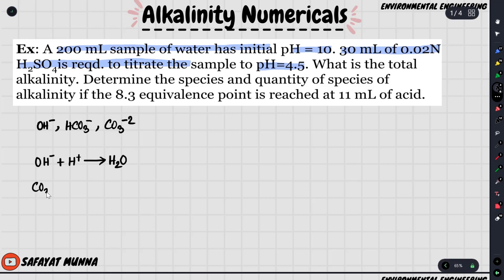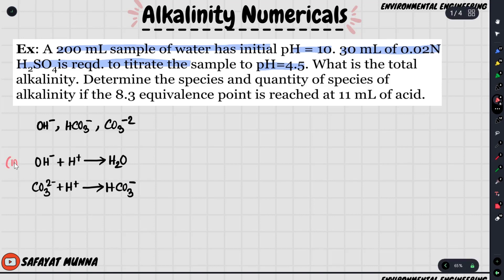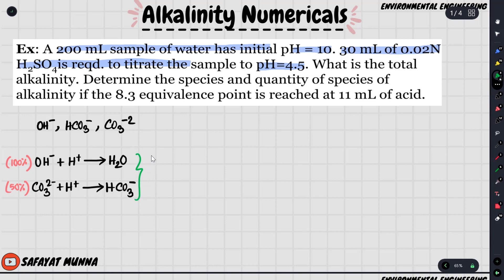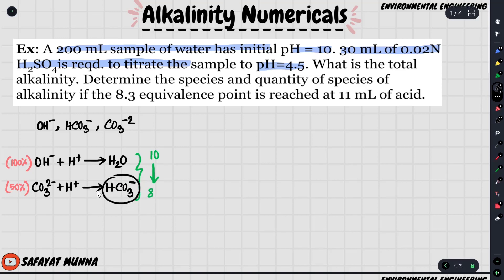We have a carbonate 2⁻ and hydrogen reaction. HCO3⁻ is involved. When we have 100% OH and 50% carbonate reaction, we can see the pH will change. The initial pH will change from 10 to 8.3 as we add acid, and the HCO3⁻ reaction starts with H⁺.